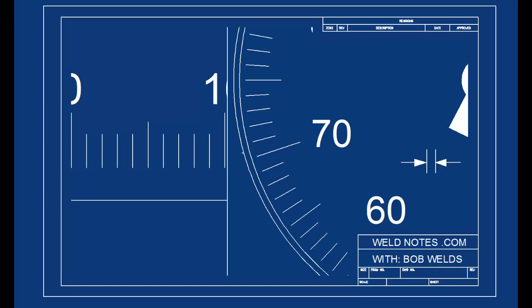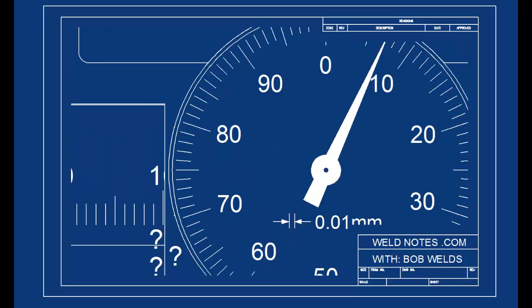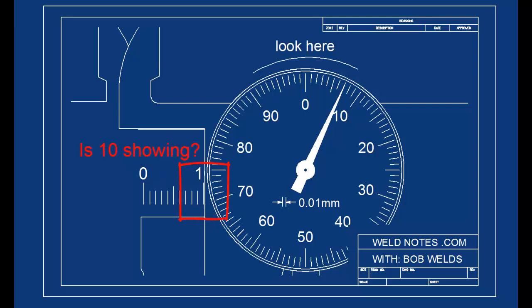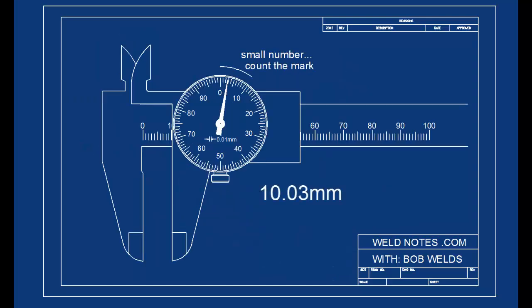Sometimes you may see just part of a mark showing. How do you know whether or not a mark is showing enough to be counted? Now, here's the answer. To know whether or not a mark on the main scale is showing, look at the dial. If a mark is only partially showing and the dial is on a small number, then you count the mark.